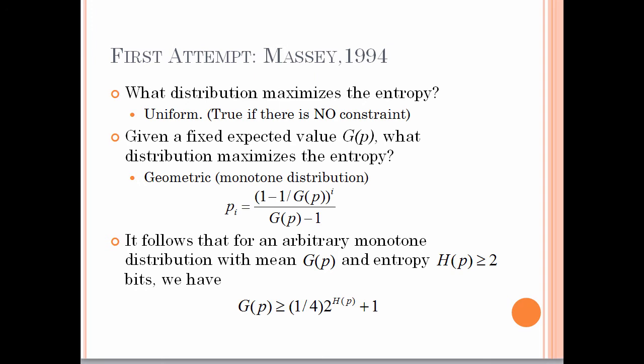The first main attempt was made by Massey in 1994. He showed in a short note that a lower bound can be given on the standard guesswork in terms of entropy, but no practical upper bound exists — which is actually good news for cryptanalysts. His methodology was based on the geometric distribution, which maximizes entropy for a fixed expected value. The geometric distribution is monotone and suitable for an optimal guessing strategy. It follows that for an arbitrary monotone distribution with mean G(P) and entropy H(P) ≥ 2 bits, we have a nice lower bound for G(P).